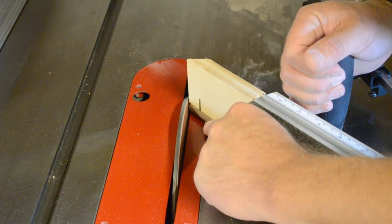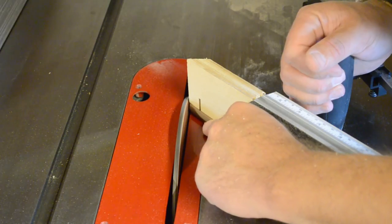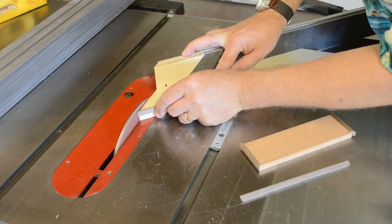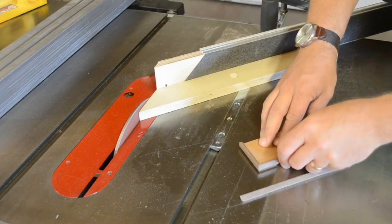Again, the parts are cross-cut slightly long and one end of each is mitered as before. Then they are each fitted in turn, working from the opposite 45 degree preset.